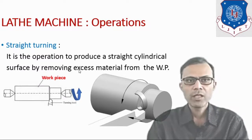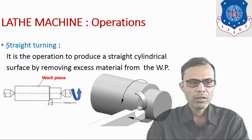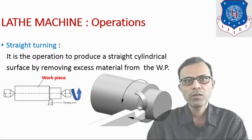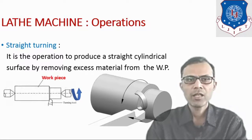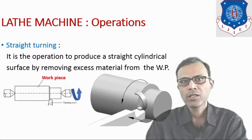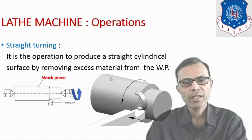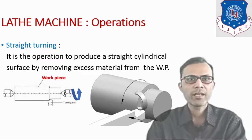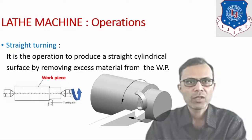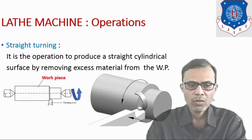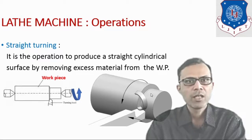Let us start with straight turning. It is the operation to produce the cylindrical surface of the workpiece. The relative movement between the workpiece and cutting tool is achieved as follows: the workpiece is revolved by holding it in the chuck or face plate, and the rotary movement is provided by the spindle of the headstock. The cutting tool is mounted on the carriage assembly and is provided the feed motion. Here you can also see in a photographic view how a cylindrical surface can be produced.